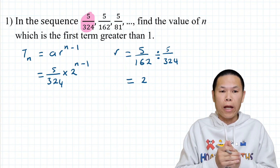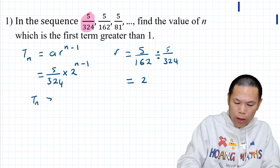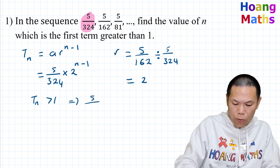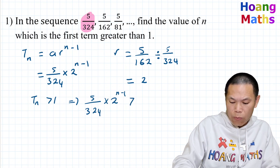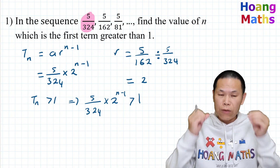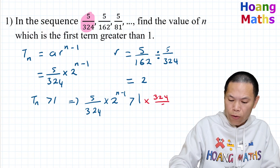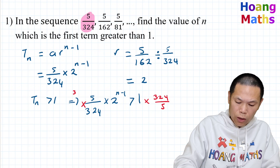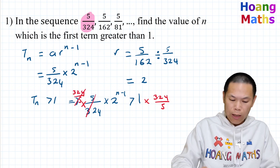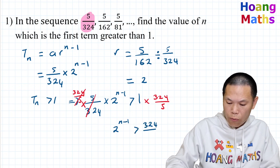To work this out, we set t(n) > 1, which means (5/324) × 2^(n−1) > 1. I multiply both sides by 324/5, so this cancels out, and on the left-hand side we are left with 2^(n−1) > 324/5.